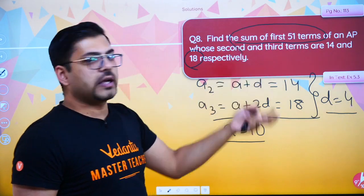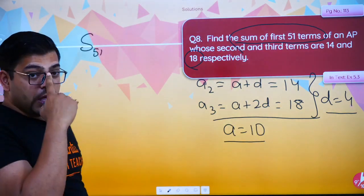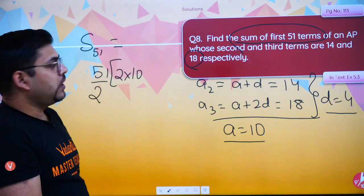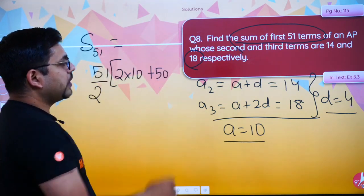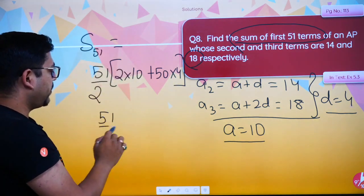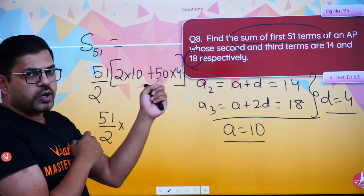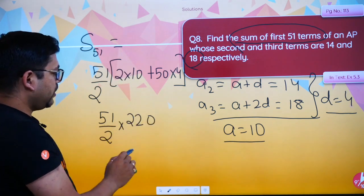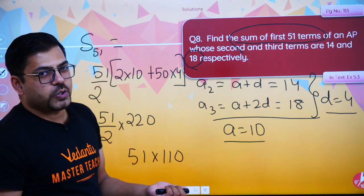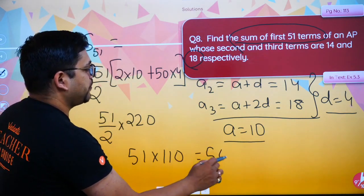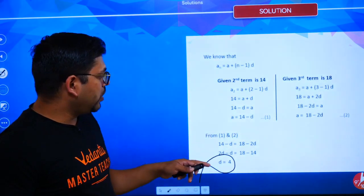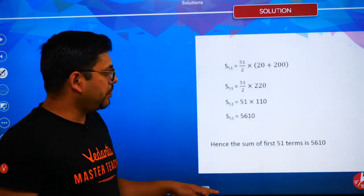Now find the sum of first 51 terms. S51 = N/2 × (2A + (N−1)D) = 51/2 × (2×10 + 50×4) = 51/2 × (20 + 200) = 51/2 × 220 = 51 × 110 = 5610. So S51 equals 5610.